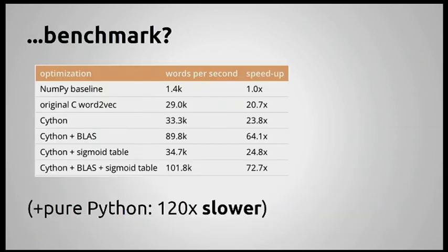Putting it all together — this is from the initial port, since then other people contributed more optimizations — combining all optimizations, it's about 100 times faster than the NumPy baseline. The takeaway: from optimized NumPy, we can still get about two orders of magnitude improvement if we are careful about memory.